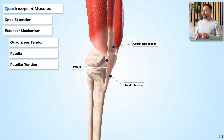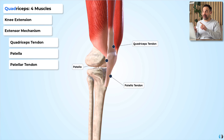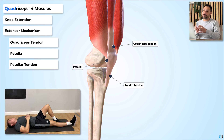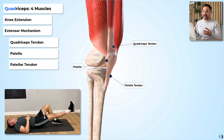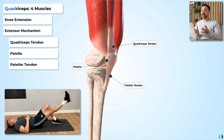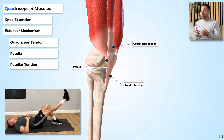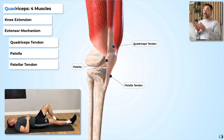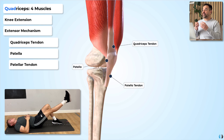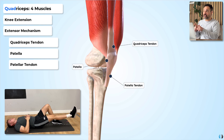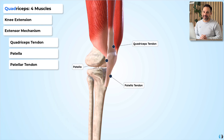Therefore, if your patient has a rupture of the quadriceps tendon, a fracture of the patella, or a rupture of the patellar tendon, they will not be able to complete a straight leg raise or knee extension. This is why one of the most focal tests done in A&E after a knee trauma is to see whether the patient can complete a straight leg raise, to check the integrity of these three structures and therefore the extensor mechanism.